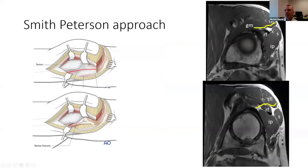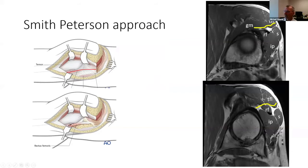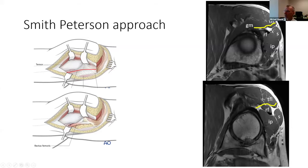Proceeding to the Smith-Peterson portion, this is probably the more confusing area for most people. There is overlying retinacular tissue on the anterior aspect of the hip that needs to be incised. From here you can identify the ascending branch of the lateral femoral circumflex vessels and the reflected head of the rectus. It's also important to identify the anterior or cranial extension of the vastus intermedius or lateralis, as this helps identify the gluteus medius tendon, which must be released as the final portion of that first step.